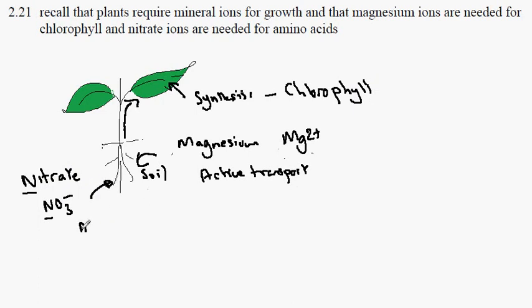Again by active transport. Transport it up through the xylem into the leaf. And there it's used to manufacture amino acids.